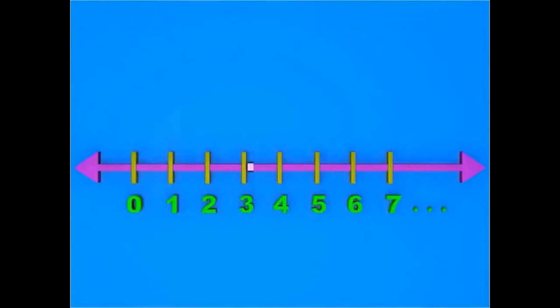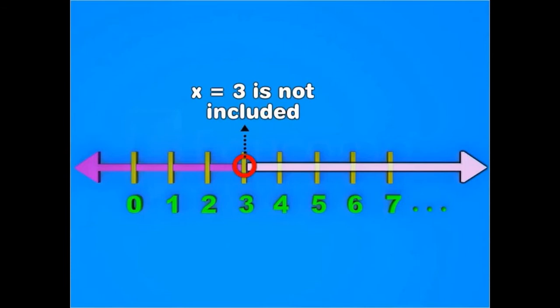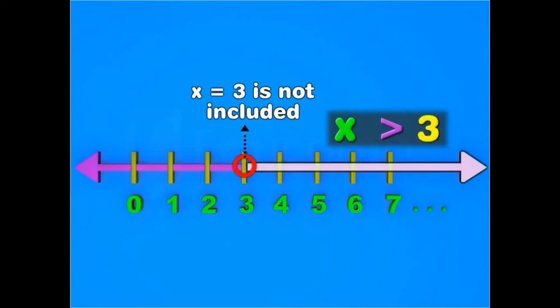Now, shade the number line to the right of 3. Also, make an open circle at 3 to show that 3 has not been included in the shaded part. This shaded part of the number line shows the inequation x is greater than 3.